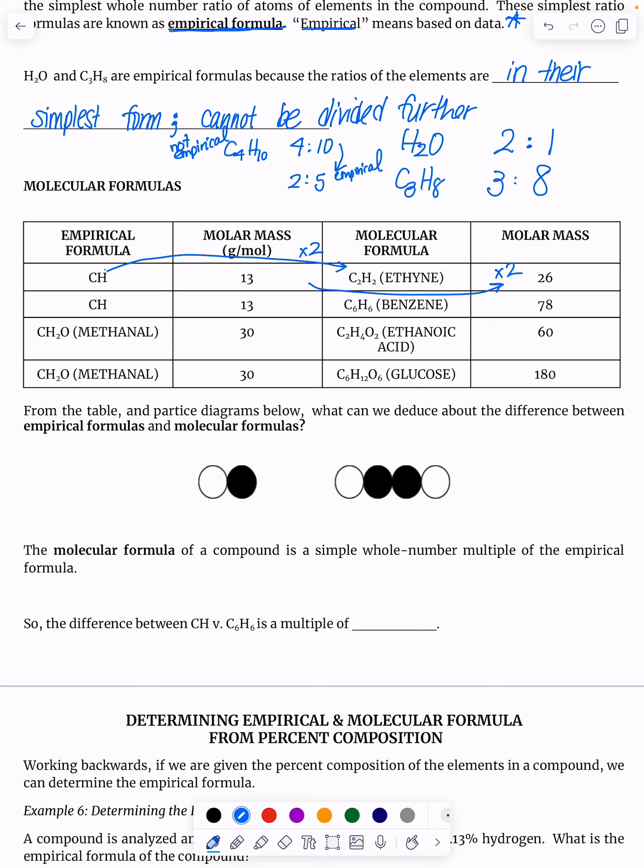Let's look at methanol and ethanoic acid. Methanol has a 1 to 2 to 1 ratio that cannot be divided further. Its molar mass is 30.